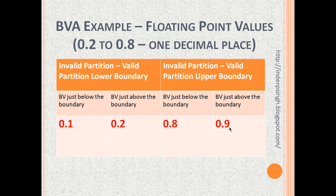Another BVA example uses floating point values: the system accepts any value between 0.2 to 0.8. At the lower boundary, 0.1 is just below and should be rejected; 0.2 is just above the boundary and should be accepted — so you test both 0.1 and 0.2. At the upper boundary, 0.8 is just within the boundary and should be accepted, while 0.9 is just outside and should be rejected by the system.